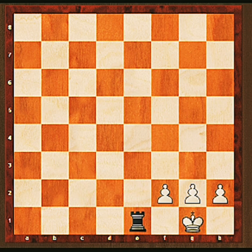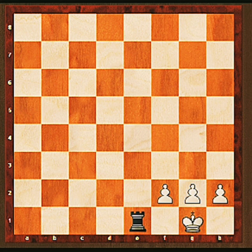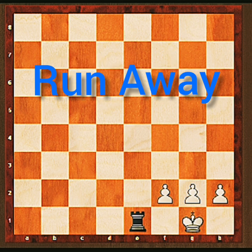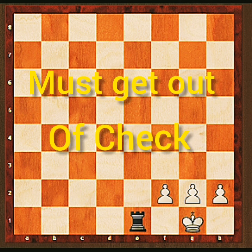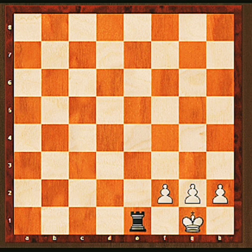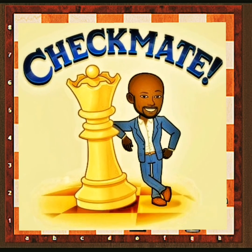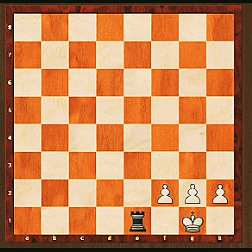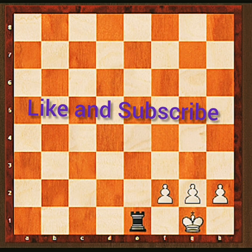Be sure to check out the checkmate part two video. To summarise: when a king is being attacked, it is called check. The team in check has three options — capture, block, or run away. If your king is in check, you must get it out of check and cannot play any other move. If you can't block, can't capture, and can't run away, then it is checkmate. Please like and subscribe to get more helpful videos on your journey — see you on the next video!